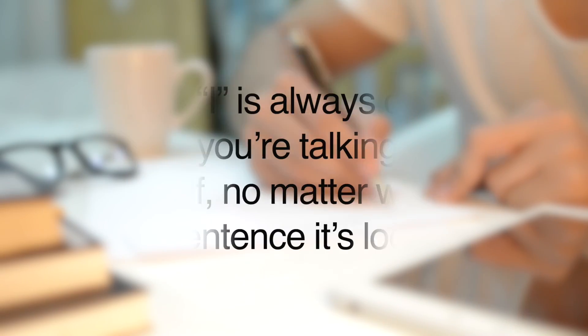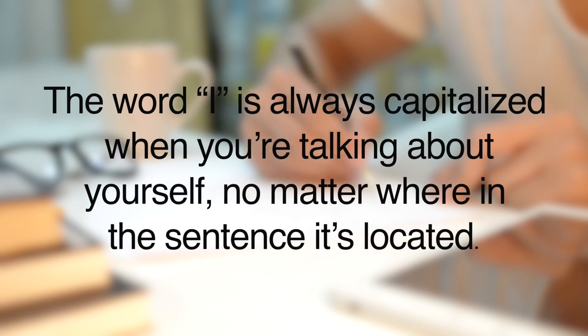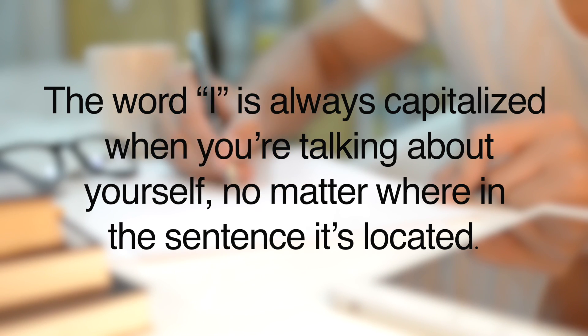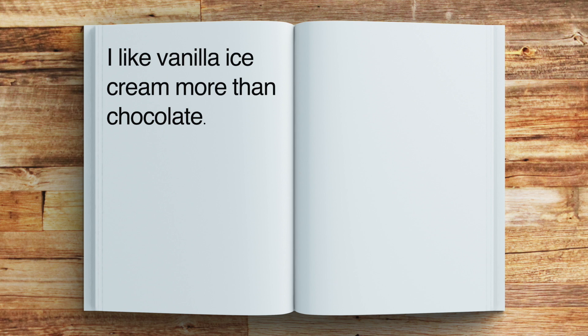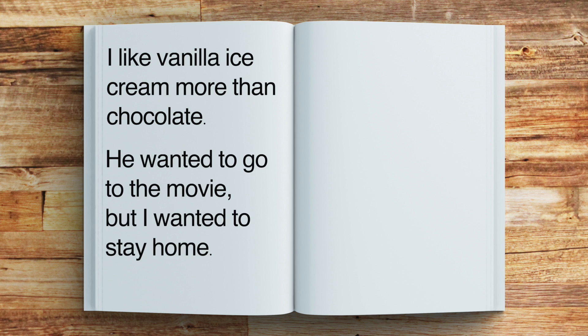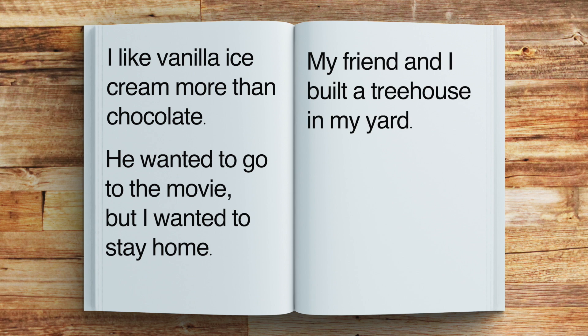Rule number two: the word I is always capitalized when you're talking about yourself, no matter where in the sentence it's located. Here are some examples: 'I like vanilla ice cream more than chocolate.' 'He wanted to go to the movie, but I wanted to stay home.' 'My friend and I built a treehouse in my yard.' See — no matter where I is located in the sentence, it's capitalized.